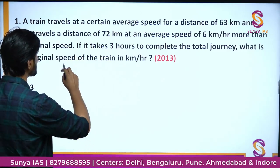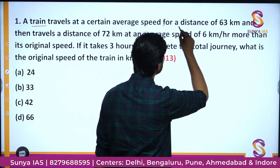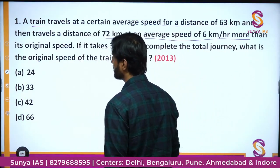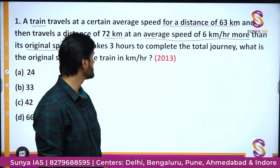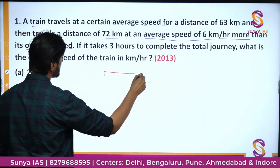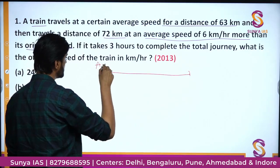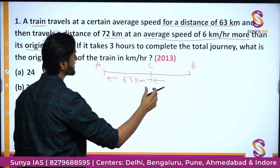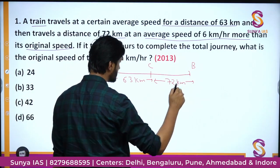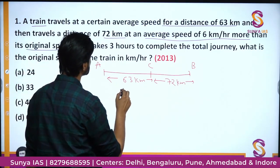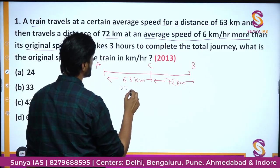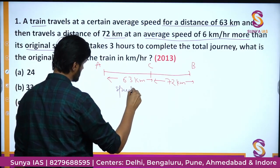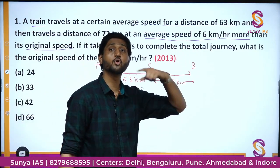Look at this question: a train travels a certain average speed for a distance of 63 kilometers and then travels a distance of 72 kilometers at an average speed of 6 kilometers per hour more than the original speed. Let me draw a rough diagram so you can grasp the situation. There is a train going from place A to B with a place C in between. The distance from A to C is 63 km and the further distance is 72 km. The speed of the train in the first part we don't know, so let us assume it to be S. In the second part, the speed is S plus 6 kilometers per hour.